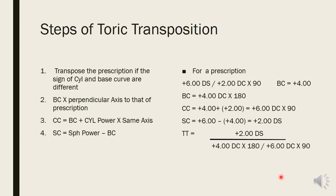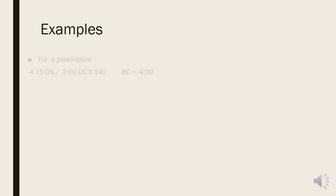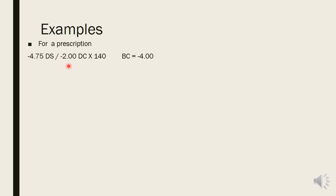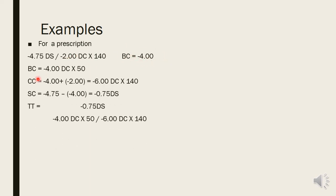Next example: minus 4.75 with minus two diopter cylinder at 140 degrees, base curve minus four. Signs match, so no transposition needed. Perpendicular to 140 = 140 minus 90 = 50 degrees. Base curve: minus four at 50 degrees. Cross curve: minus four plus minus two = minus six at 140 degrees. Sphere curve: minus 4.75 minus (minus four) = minus 4.75 plus four = minus 0.75 diopters. Toric transposition: minus 0.75 / minus four at 50, minus six at 140.